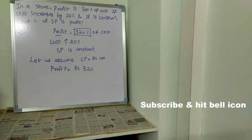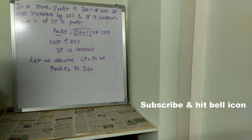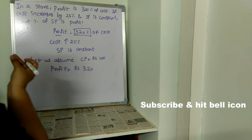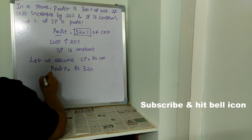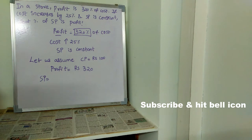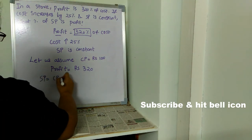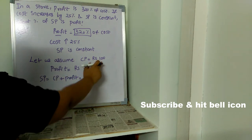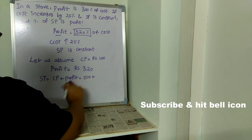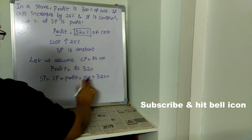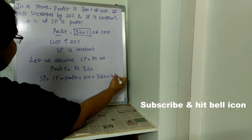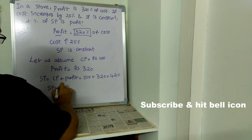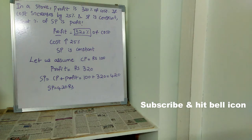We don't know what the selling price is. They say selling price is constant, but we need to find it. The formula for selling price is: selling price equals cost price plus profit. Cost price is rupees 100 and profit is rupees 320, so selling price is 100 plus 320, which is rupees 420.